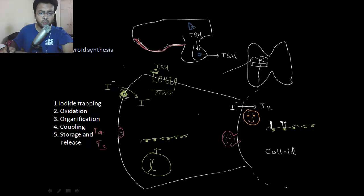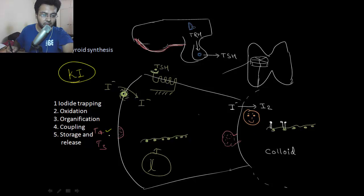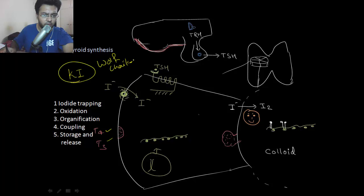Now let's look at drugs acting on thyroid hormone synthesis. If you give a patient an excessive amount of iodine in the form of potassium iodide, it will inhibit the iodine trapper, and ultimately there will be decreased synthesis of T3 and T4. This inhibition of the iodine trapper by excess potassium iodide is called the Wolff-Chaikoff effect.